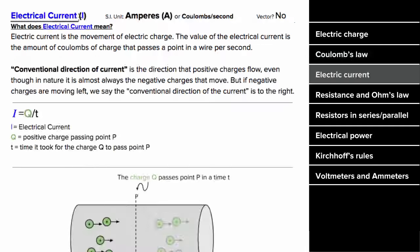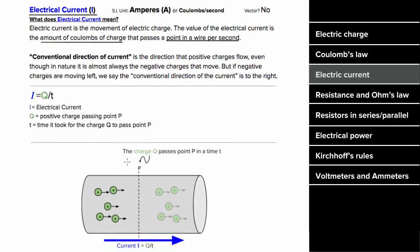Electrical current I tells you the amount of Coulombs of charge that passes a point in a wire per second. The current I equals the amount of charge that flows past a point per unit time, giving units of Coulombs per second, which we abbreviate as an ampere. Since charge and time aren't vectors, current is not a vector either.